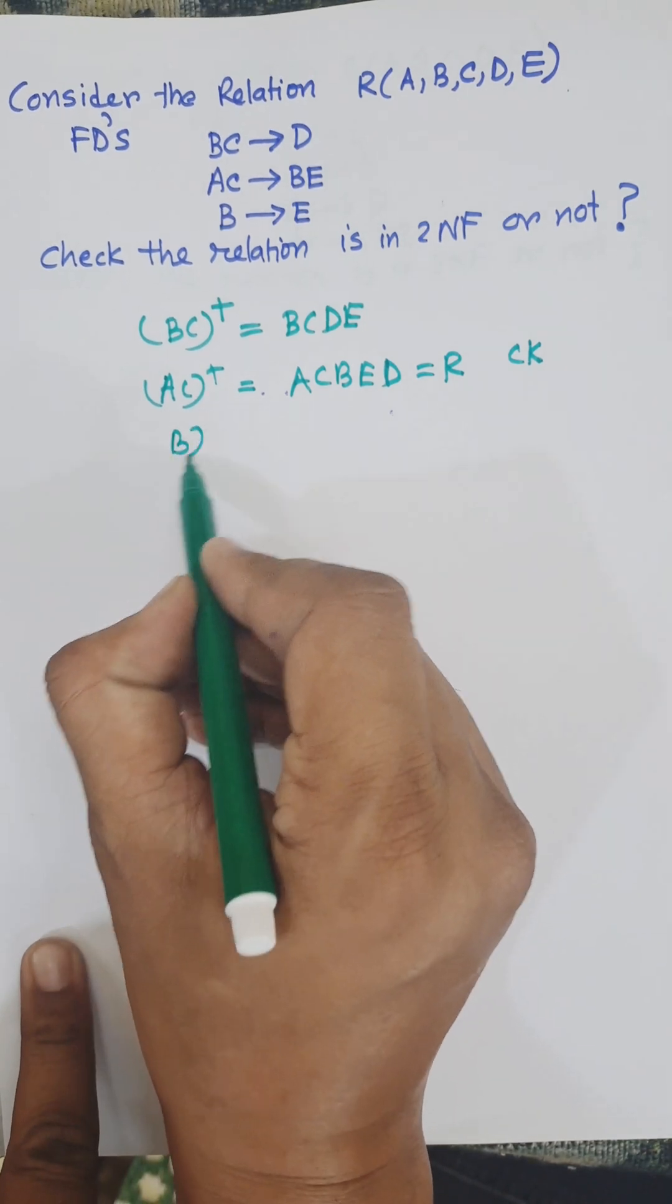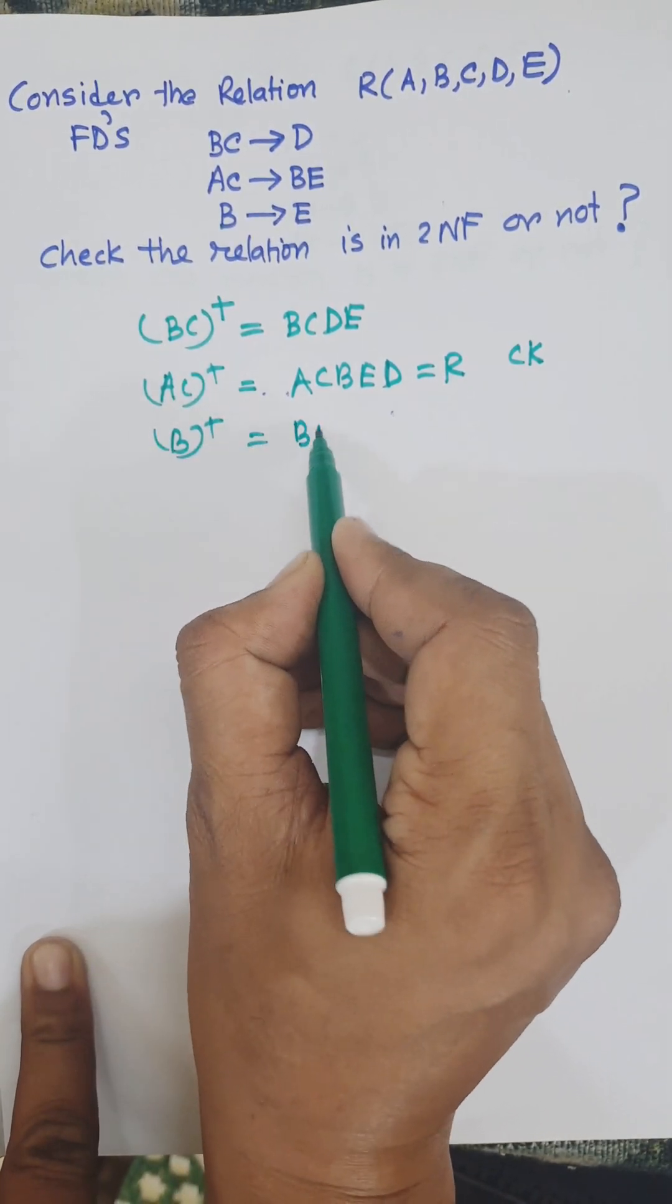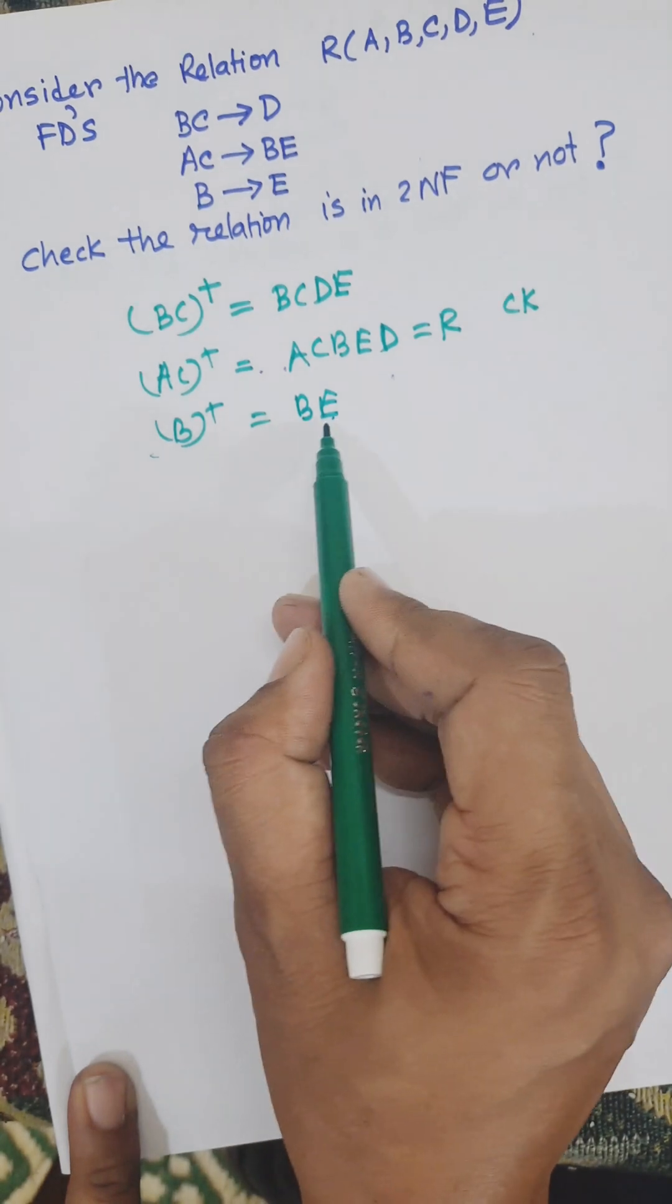Now find (B)+ using B→E, giving (B)+ = BE. So B is not a candidate key.